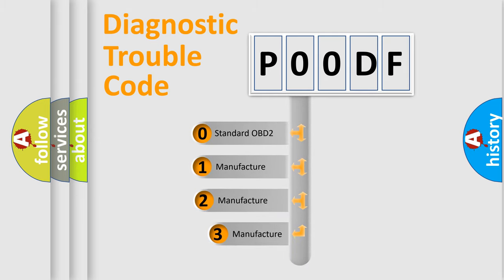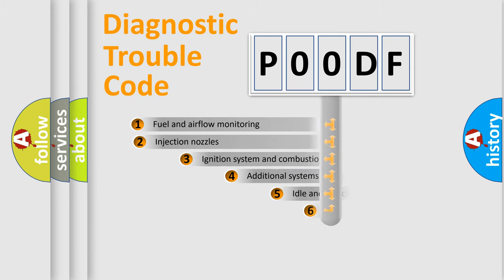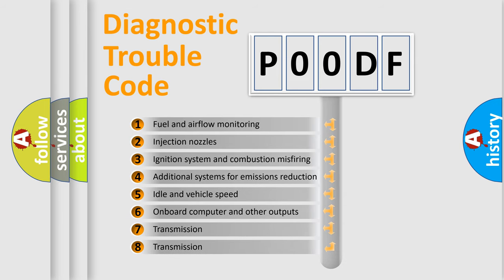If the second character is expressed as zero, it is a standardized error. In the case of numbers 1, 2, or 3, it is a manufacturer-specific error expression. The third character specifies a subset of errors.